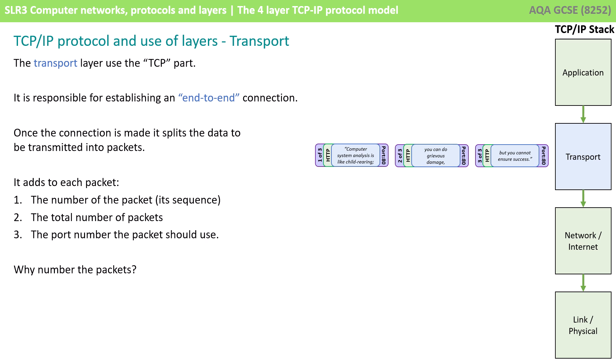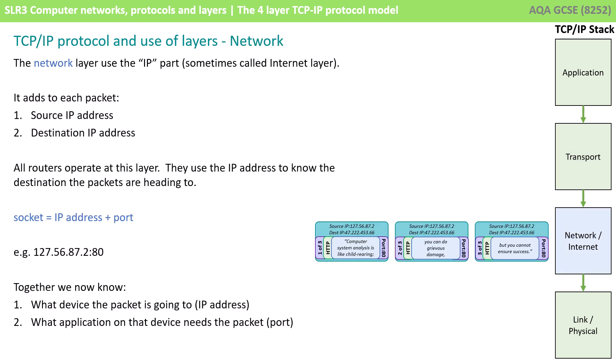So why do we need to number the packets? Well, this comes down to how data packets travel across the internet. There's a good chance that packets may arrive at the destination computer out of order, and the sequencing numbers added by the transport layer allow the receiving computer to reassemble the packets in the correct sequence. We then get passed down to the network layer, sometimes referred to as the internet layer, which uses the IP part of the TCP/IP protocol. It adds to each packet a source IP address and a destination IP address, and our data from the transport layer is wrapped up again with this additional information.